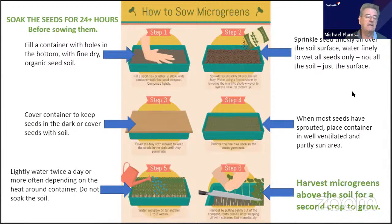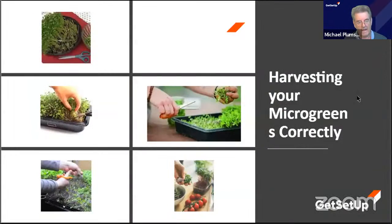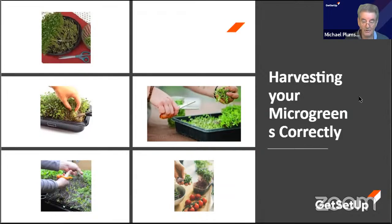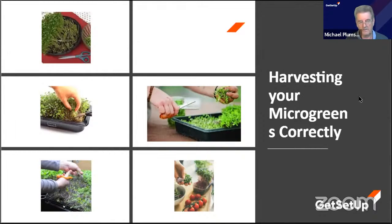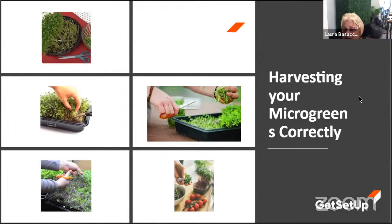Microgreens are harvested above the ground. You do not eat the seeds. Unlike a sprout where you eat the whole thing, when microgreens have been in soil and the leaves have been interacting with the sun, you don't want to eat those seeds.